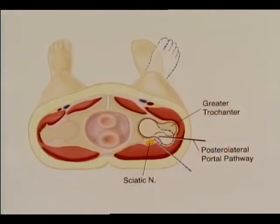Neutral rotation during portal placement is important. If the hip is externally rotated, the greater trochanter moves posteriorly and could cause the posterior lateral portal to pass closer to the sciatic nerve during placement.